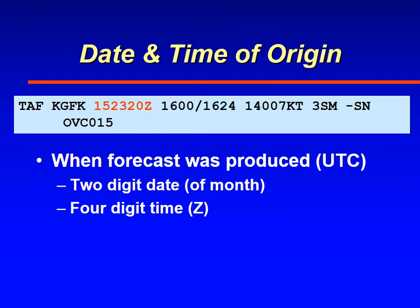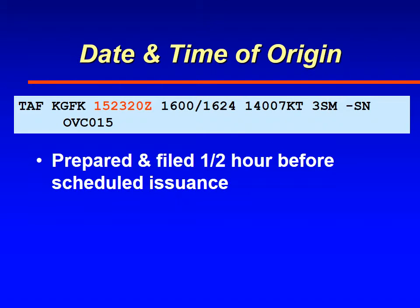Next comes the date and time at which the forecast was produced. The first two numbers are the date of the month, and the next four numbers are the time — of course times are always in Zulu. Forecasts are usually issued a half hour before their scheduled issuance. Since forecasts come out at 06, 12, and 18 Zulu, about a half hour before each one of those you should see the forecast.